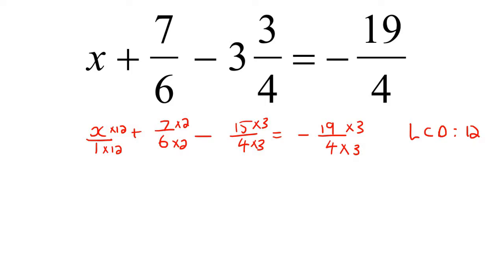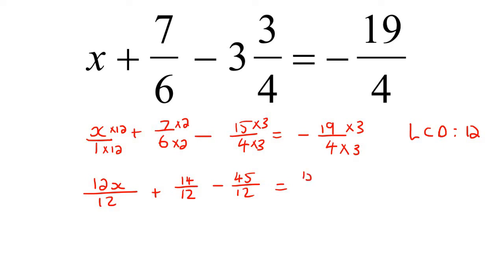So that gives us 12x over 12, plus 14 over 12, minus 45 over 12, equals 57 over 12.